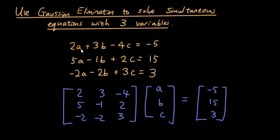So you can see here I have three equations, and they all involve the variables a, b, and c. So 2a plus 3b minus 4c equals negative 5, and so on.